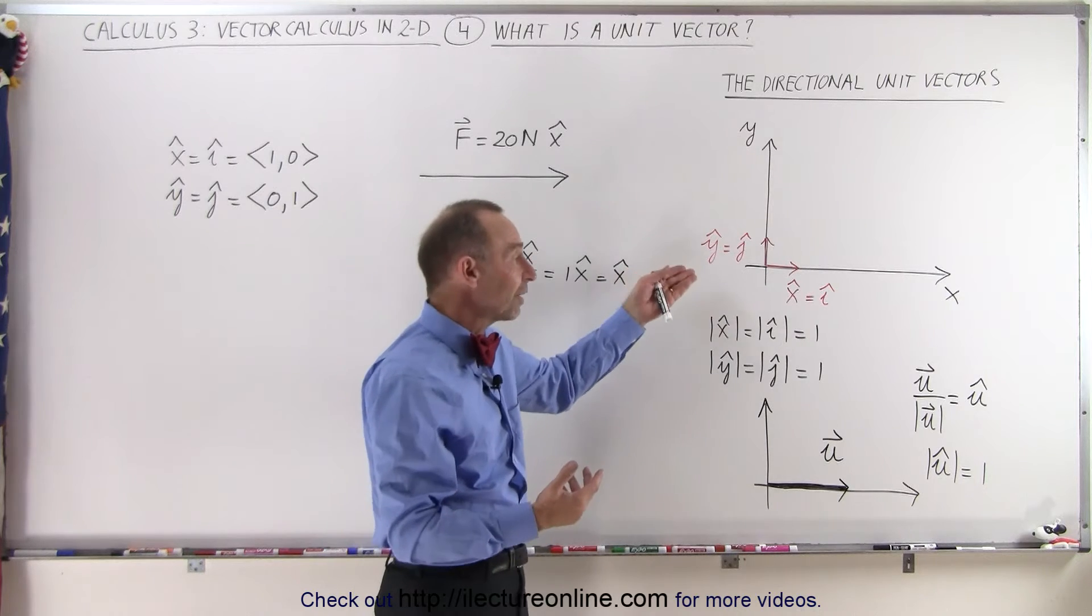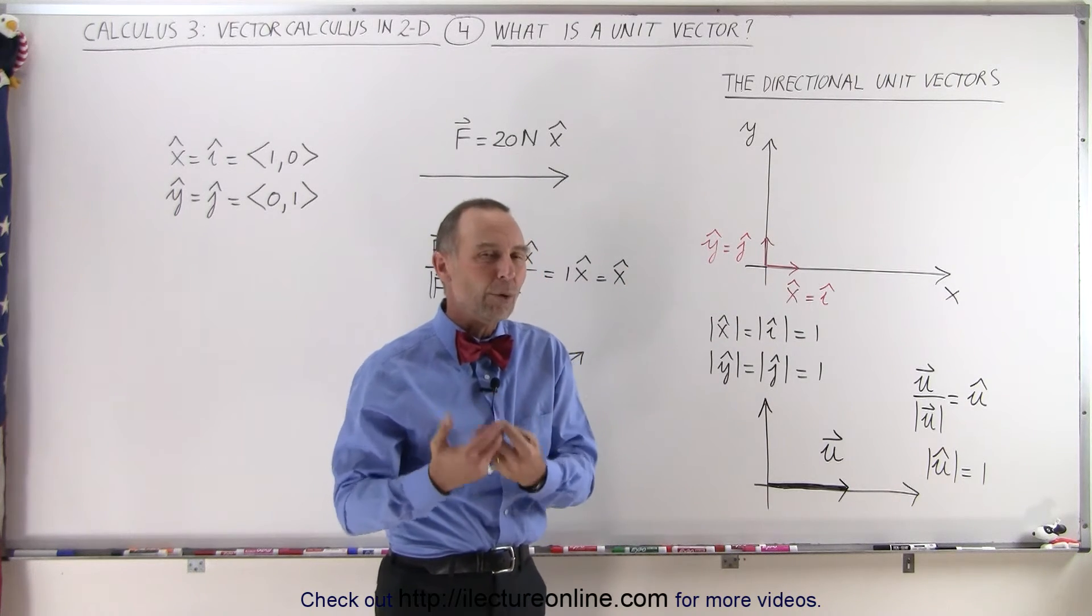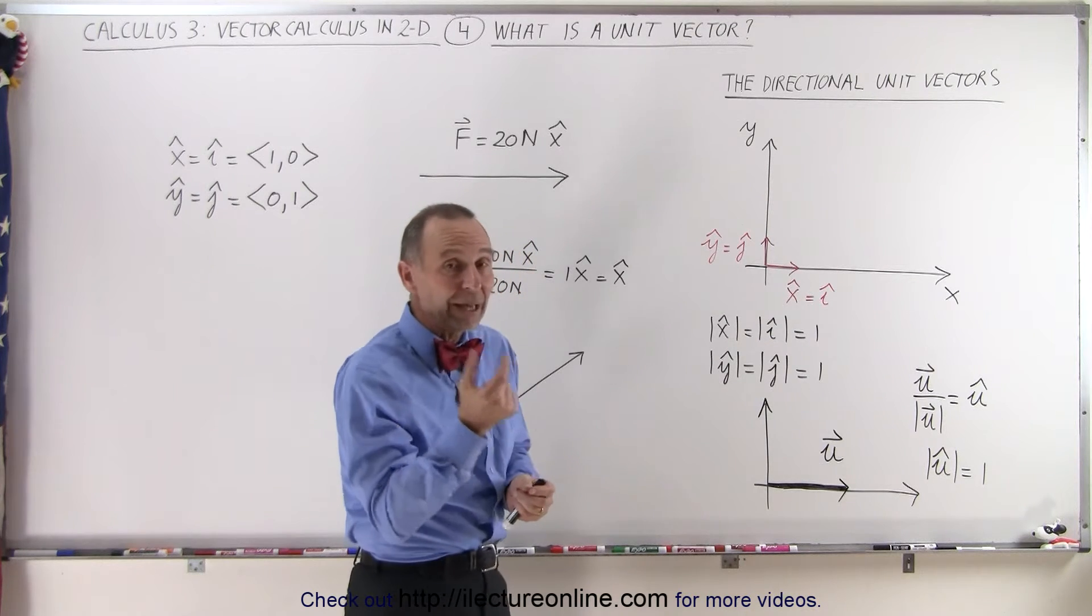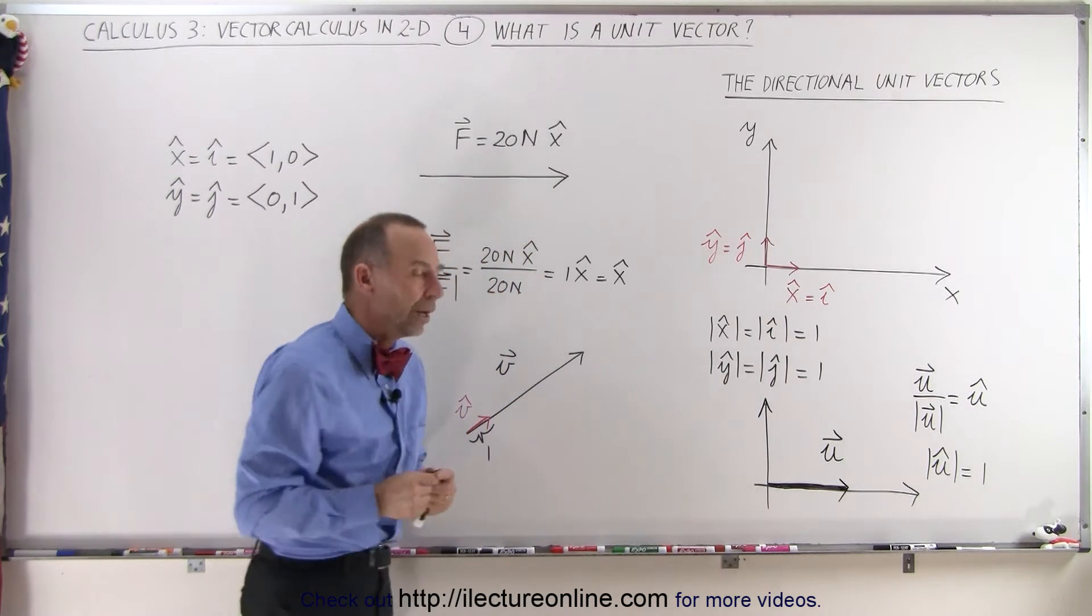So it doesn't have to be one of the directional vectors. It could simply be a vector pointing in the same direction as the vector we started with in the first place, except now that it only has magnitude 1.